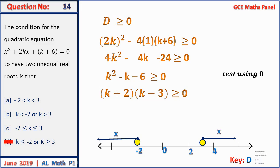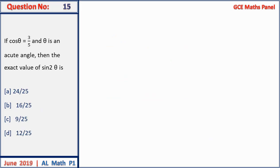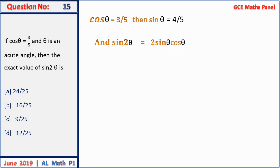Question 15: if cos θ = 3/5 and θ is an acute angle, find the exact value of sin 2θ. Using Pythagoras, sin θ = 4/5. Then sin 2θ = 2 sin θ cos θ = 2 × (4/5) × (3/5) = 24/25. Answer A.